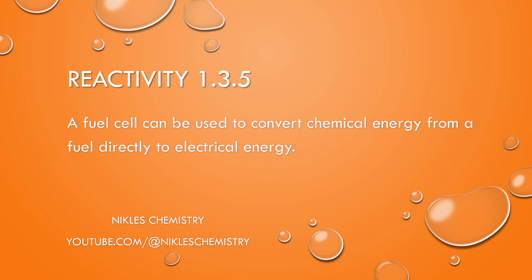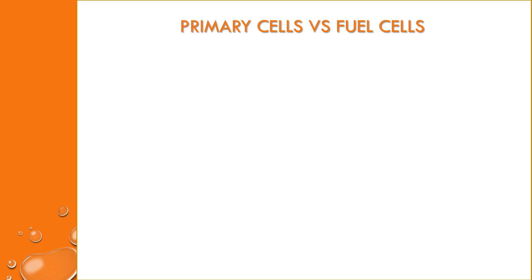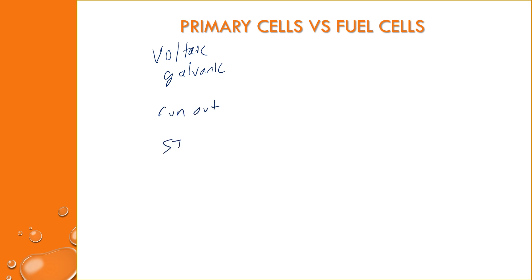Today we're going to talk about reactivity 1.3.5, which is all about fuel cells. When we're talking about electrochemical cells, we're talking about redox reactions that are either producing electrical energy or consuming it. We're going to focus on primary cells, also called voltaic or galvanic cells, and the difference between those and fuel cells. Both of these produce electrical energy, but a voltaic or galvanic cell has a limited amount of reactant, so it will eventually run out and stop producing electrical energy.